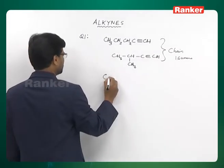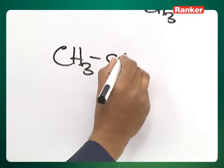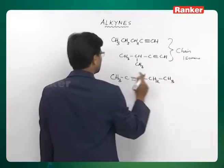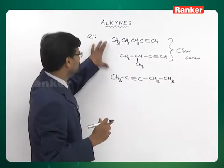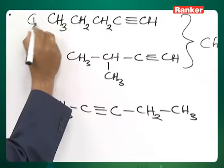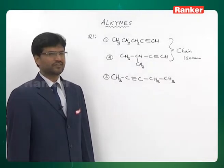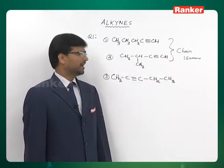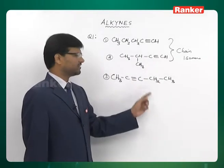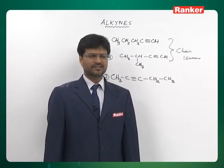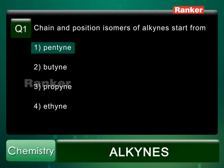Its position isomer can be written as 2-pentyne. So 1-pentyne and 2-pentyne are position isomers, numbered as one, two, three. Structures one and two are chain isomers, one and three are position isomers, and two and three are also chain isomers. So you need a minimum of five carbons. The correct answer is the first option — pentyne. From pentyne onwards, it is possible to have both chain isomerism and position isomerism in alkynes.